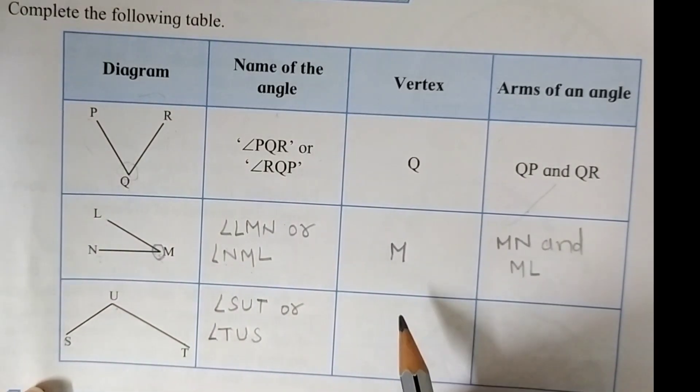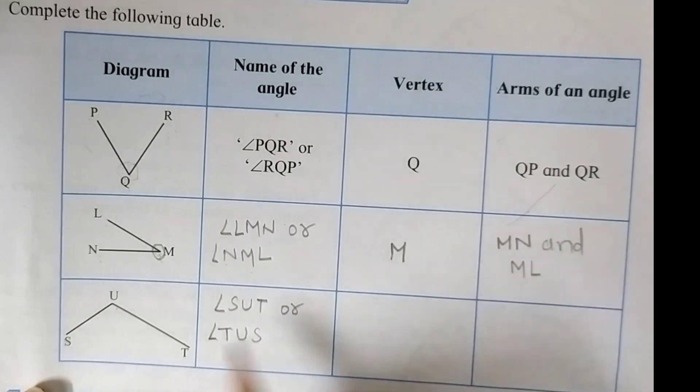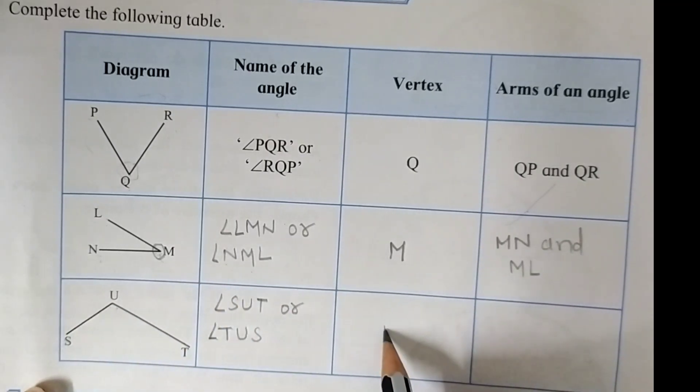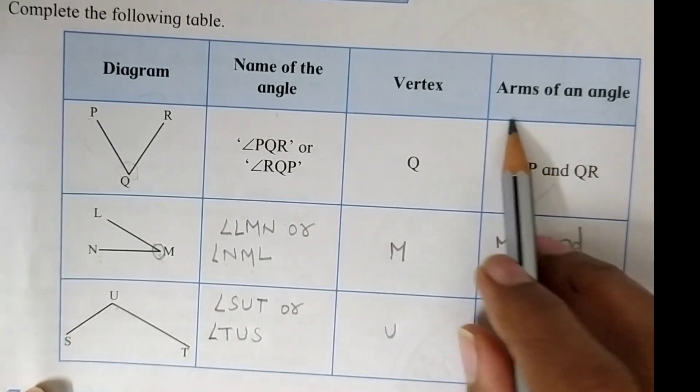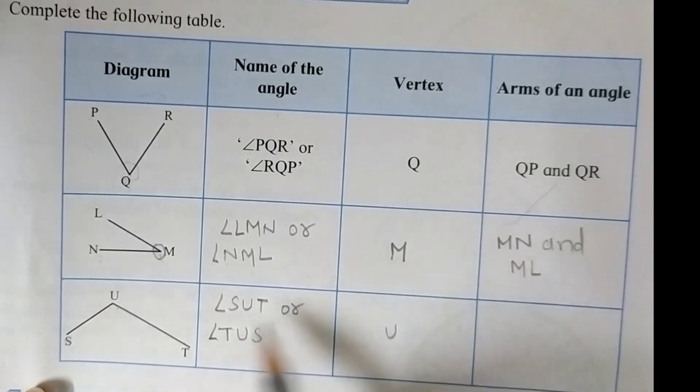The vertex of angle is U, and arms of an angle are US and UT.